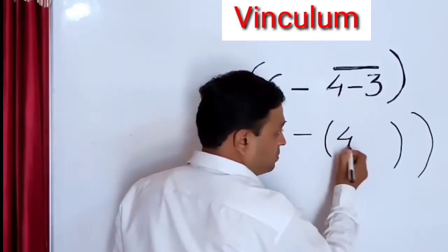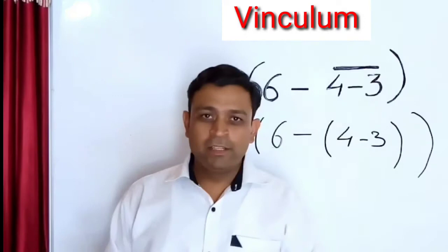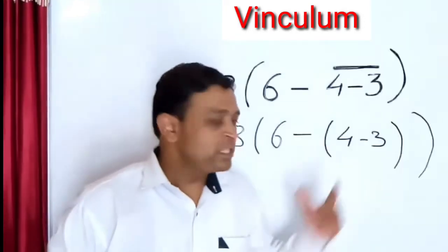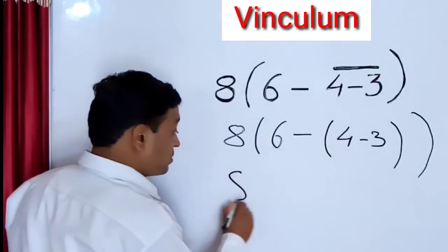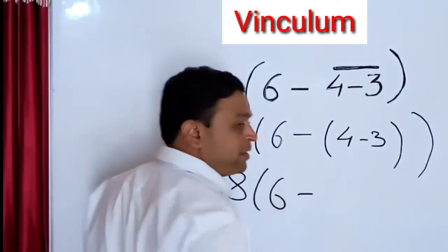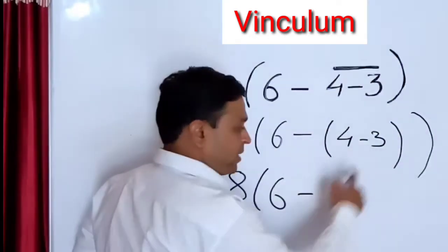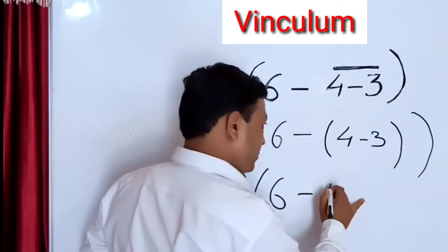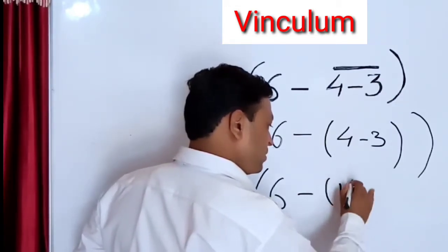The negative sign before 4 minus 3 is not considered in this group. Then we have taken 4 minus 3 in that separate bracket. Then after that, we have to simply solve it as regular. Now we all know that 4 minus 3 will be equal to 1, then we write 1 in separate round bracket.